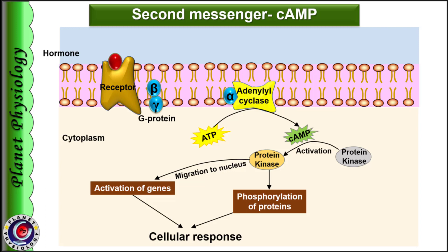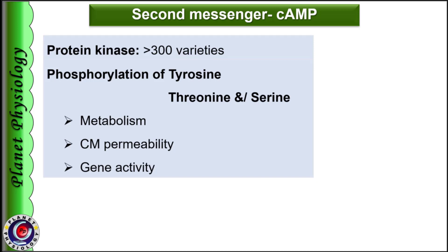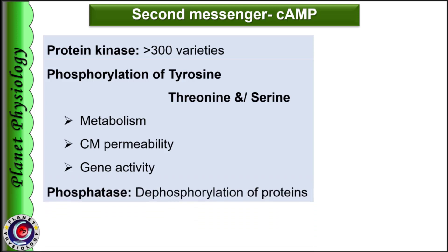Here we are talking about stimulatory, i.e., Alpha S type of G protein. The response depends on the type of kinase being activated. Kinases usually act by phosphorylation of tyrosine, threonine or serine residues in proteins. Based on the type of kinase and the proteins being phosphorylated, the cell shows changes in its metabolism, permeability or genetic activity. Till now, more than 300 kinases have been identified. Cyclic AMP may also activate phosphatase, which leads to dephosphorylation of protein — this is called the phosphate timer. The action of cyclic AMP is terminated by degradation of cyclic AMP to 5-AMP by the enzyme phosphodiesterase.